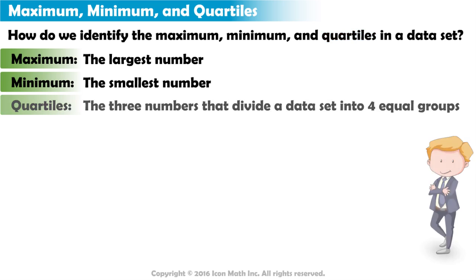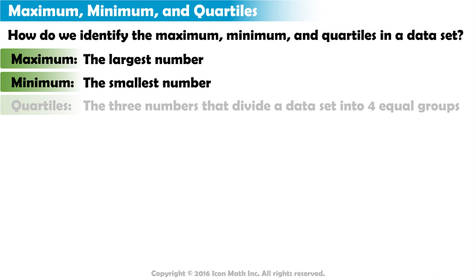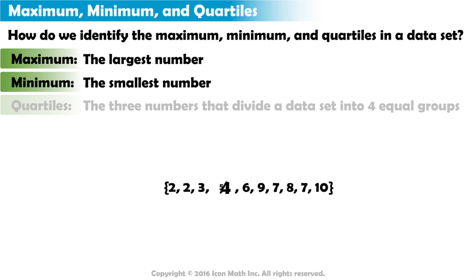Let's begin by finding the maximum and minimum for this dataset. First, we must put the dataset in numerical order. The maximum or highest number is 10, and the minimum or lowest number is 2.